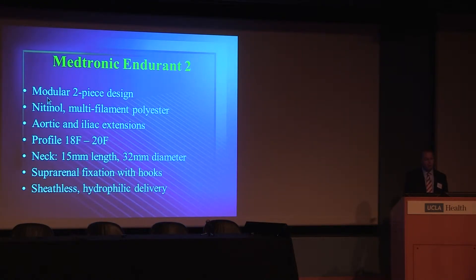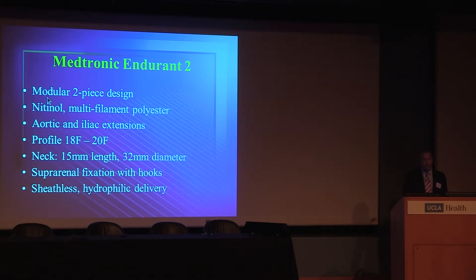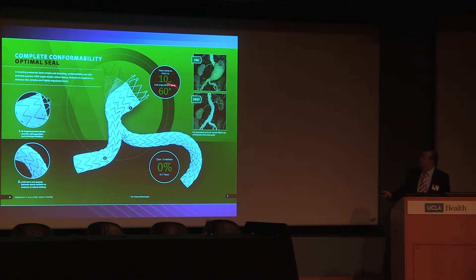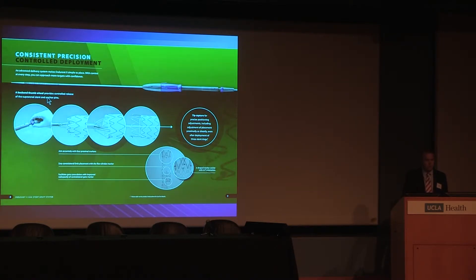The Medtronic Endurant II is also a modular two-piece design system — nitinol covered with a multi-filament polymer, with aortic and iliac extenders. The neck dimensions are 15 mm and up to 32 mm diameter. It has very stable fixation with suprarenal hooks and uncovered stents and a very nice sheathless hydrophilic delivery system. It uses M-shaped stents and is able to treat high neck angulation up to 60 degrees, with very good data for short neck 10 mm landing.